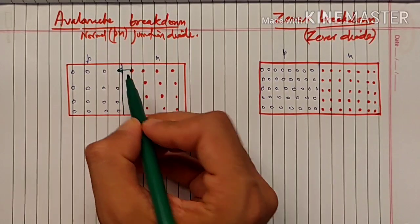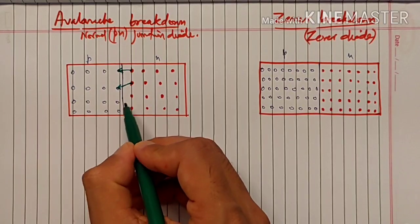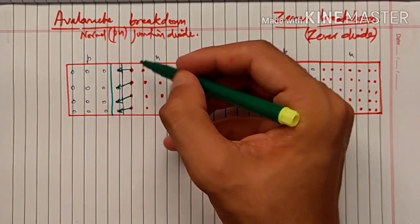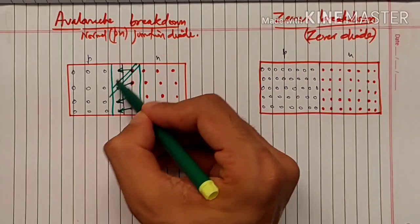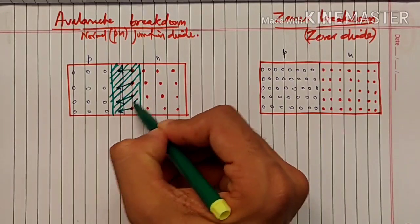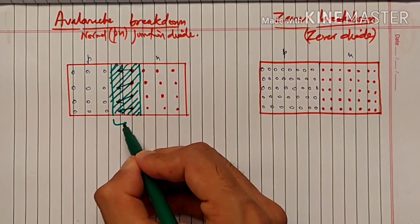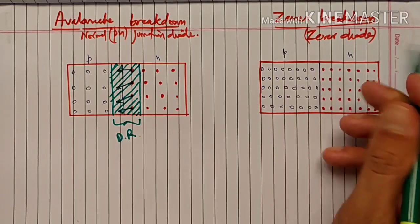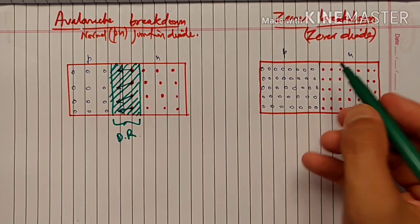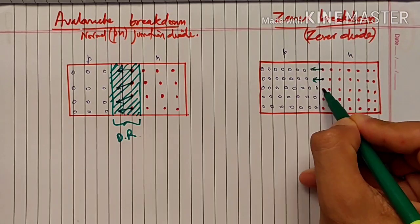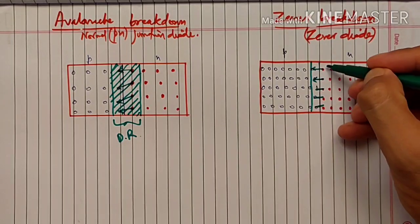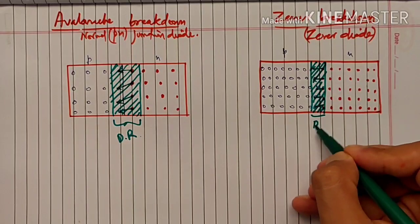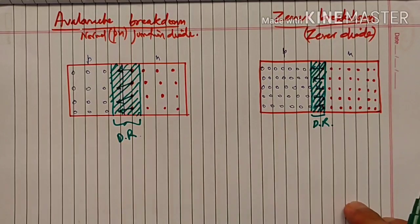जब आपने P और N type material को close लाया तो electrons यहाँ से इधर जाएंगे, holes के साथ recombine होंगे। जो region बन गई उसमें कोई charge carrier नहीं होगा - इस region का नाम है depletion region। Zener diode के case में यह depletion region will be very small.